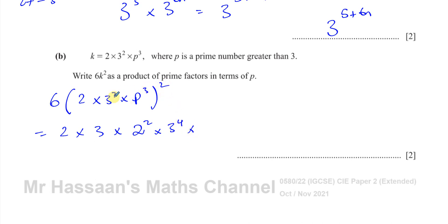So basically when you raise a power to another power, you have to multiply it by that number. So 2 to the power of 2 is 2 squared, 3 squared to the power of 2 is 3 to the power of 4, and p cubed to the power of 2 is p to the power of 6. I have to multiply the powers.